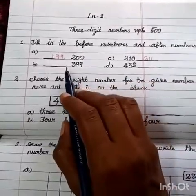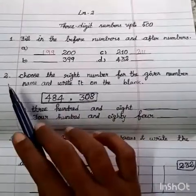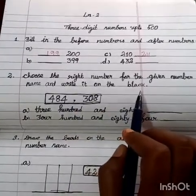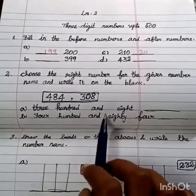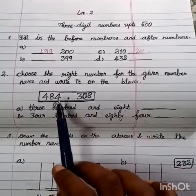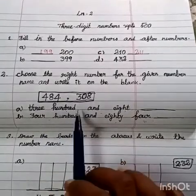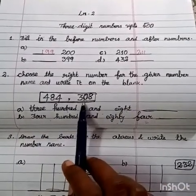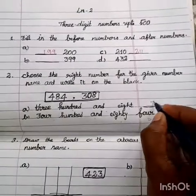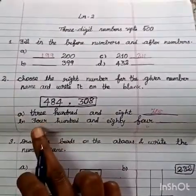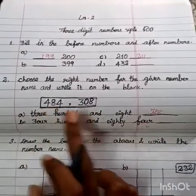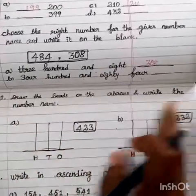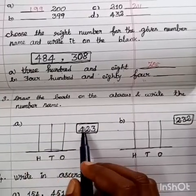Second question, choose the right number for the given number name and write it on the blank. The options are 308 and 484. First question, 308. Then 484.